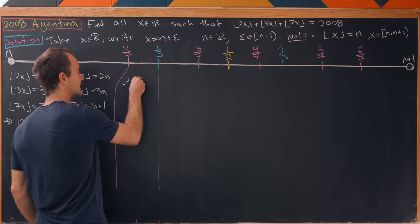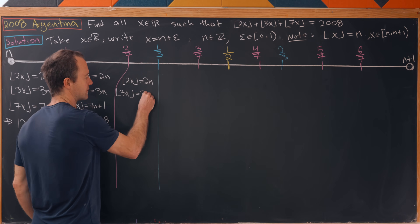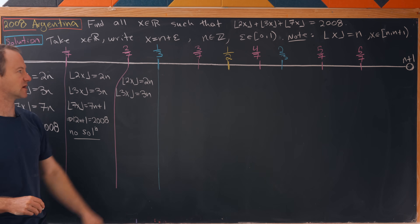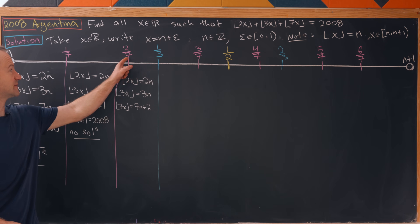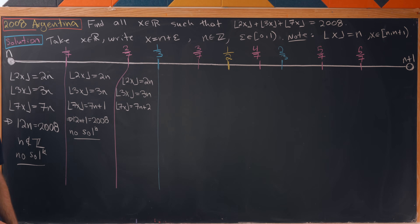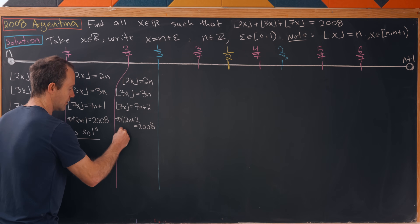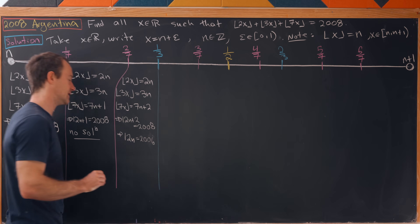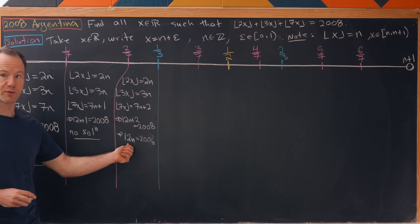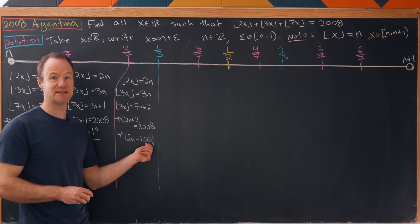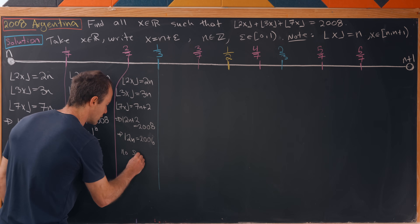In the region between 2/7 and 1/3: floor(2x) is still 2n (ε < 1/2), floor(3x) is still 3n (ε < 1/3), and floor(7x) = 7n + 2 because ε is between 2/7 and 3/7. Adding all of this up: 12n + 2 = 2008, so 12n = 2006. Again no solution, because the left-hand side is divisible by 3 but the right-hand side is not.